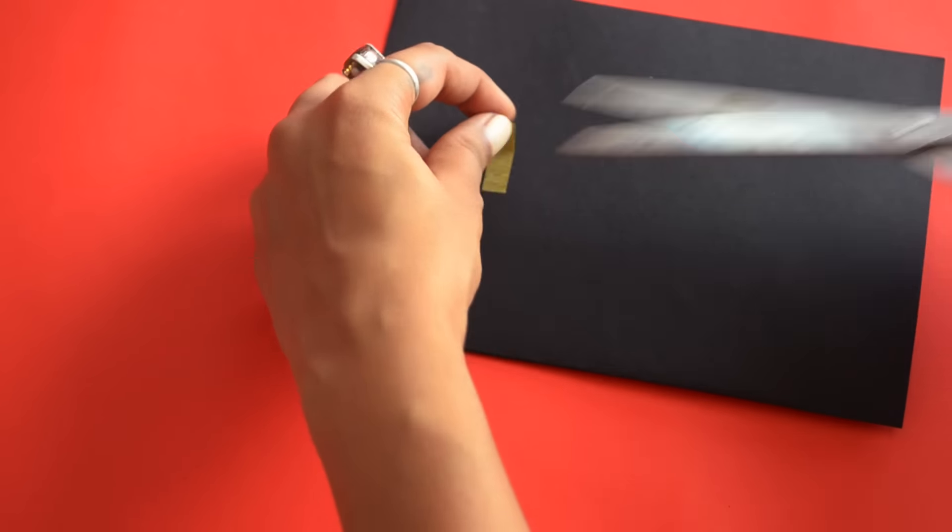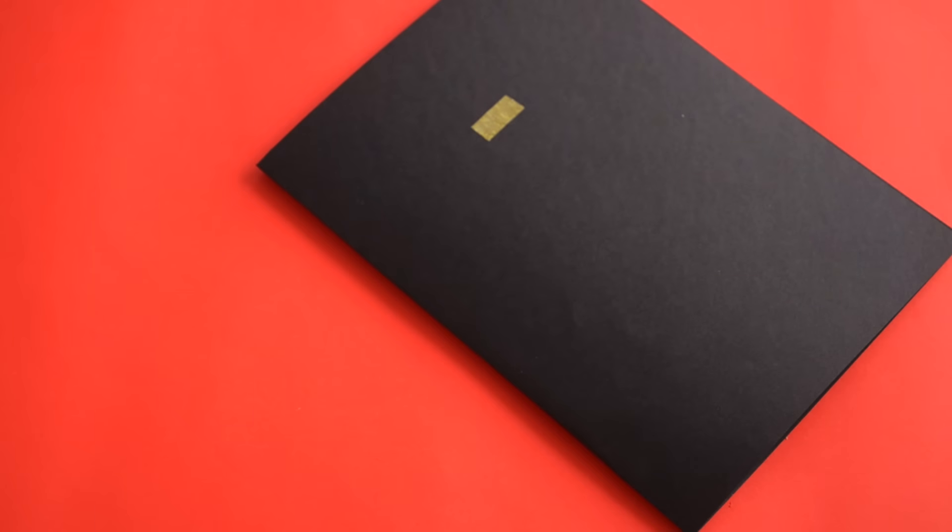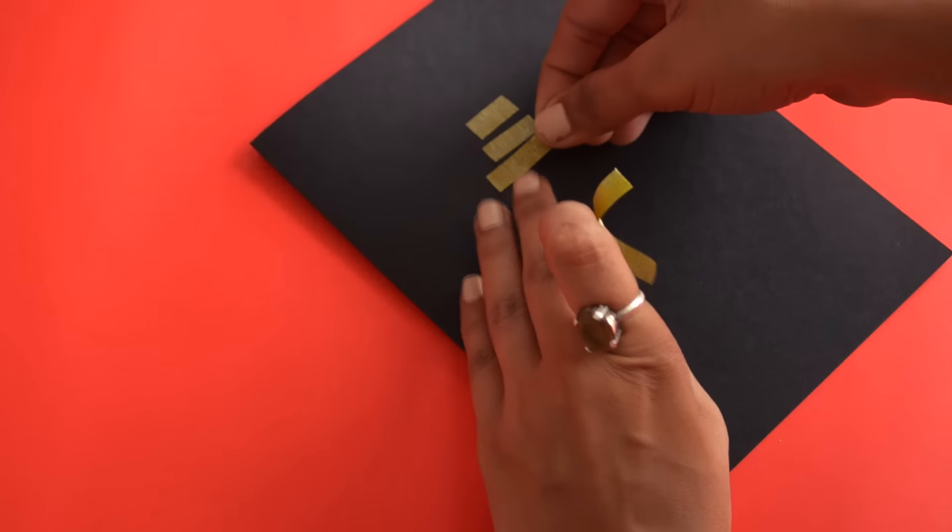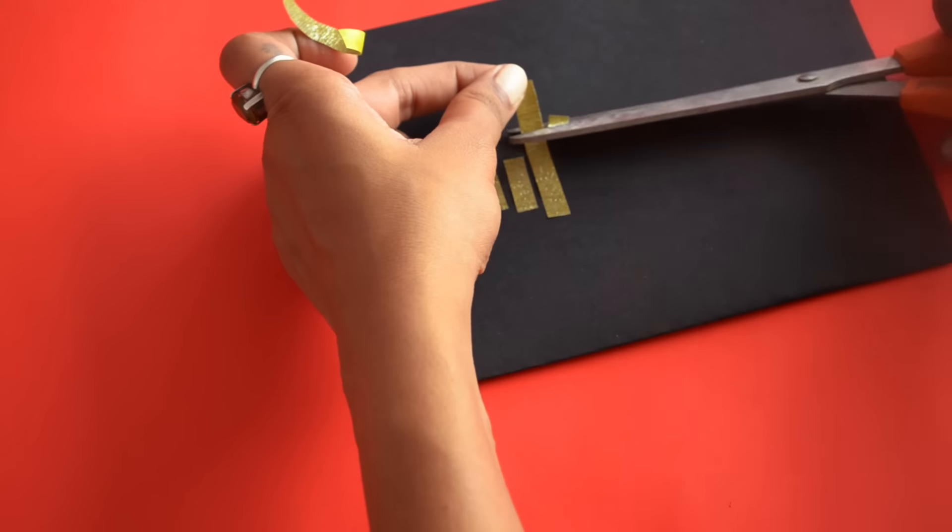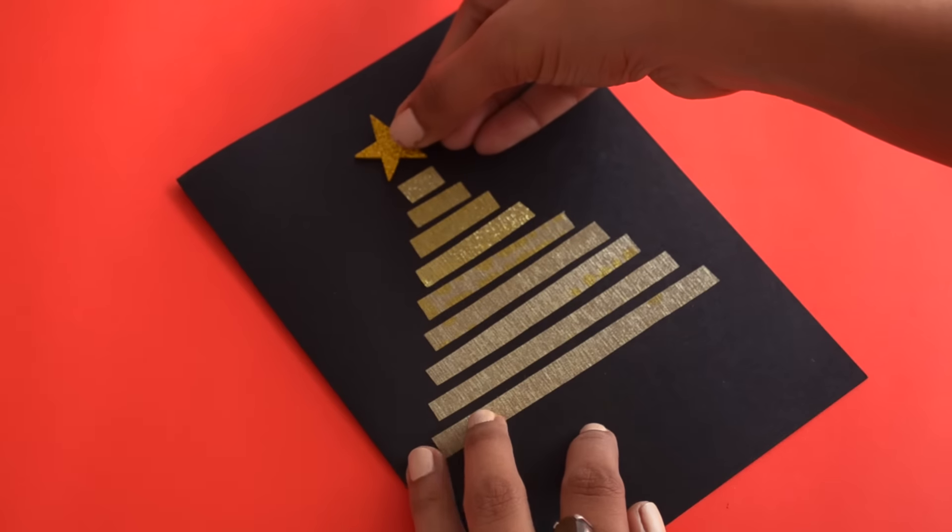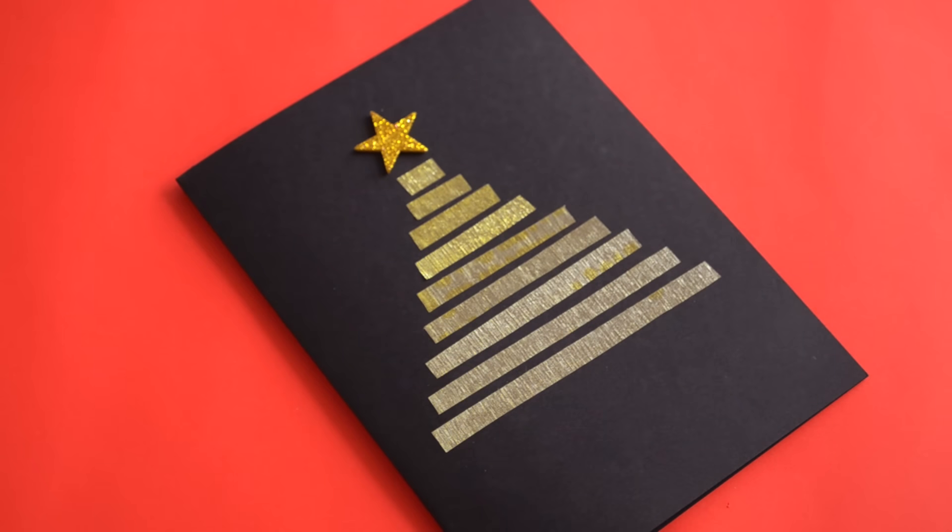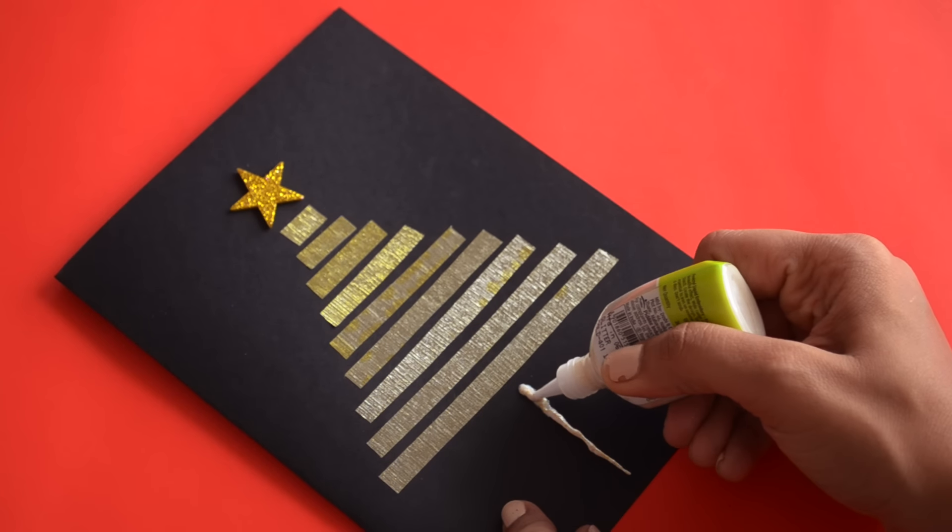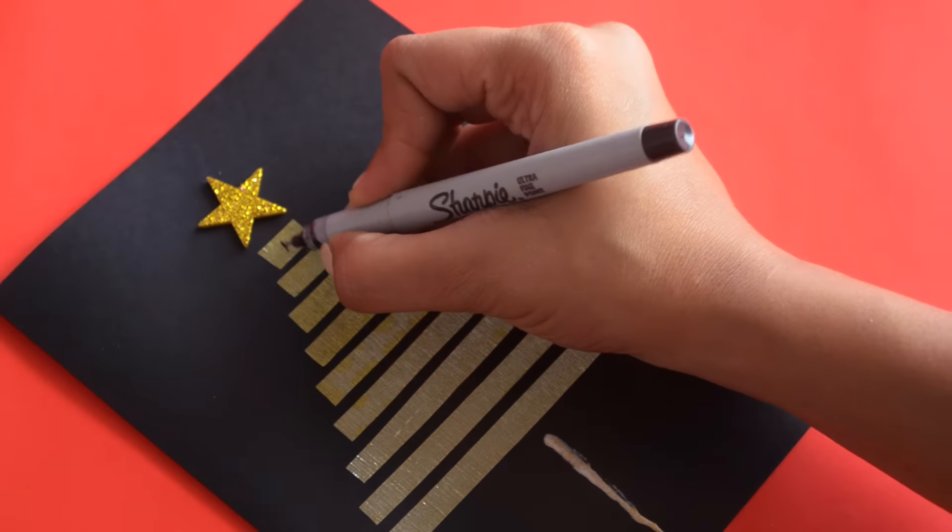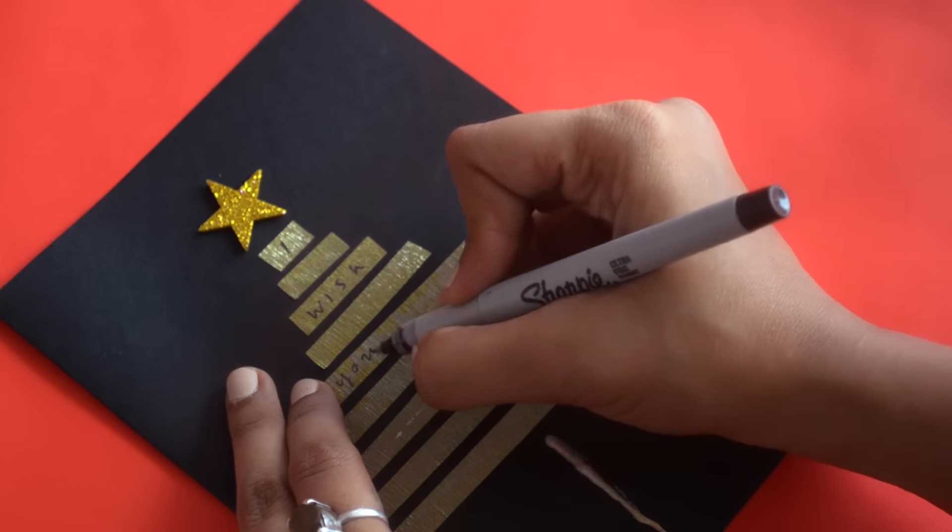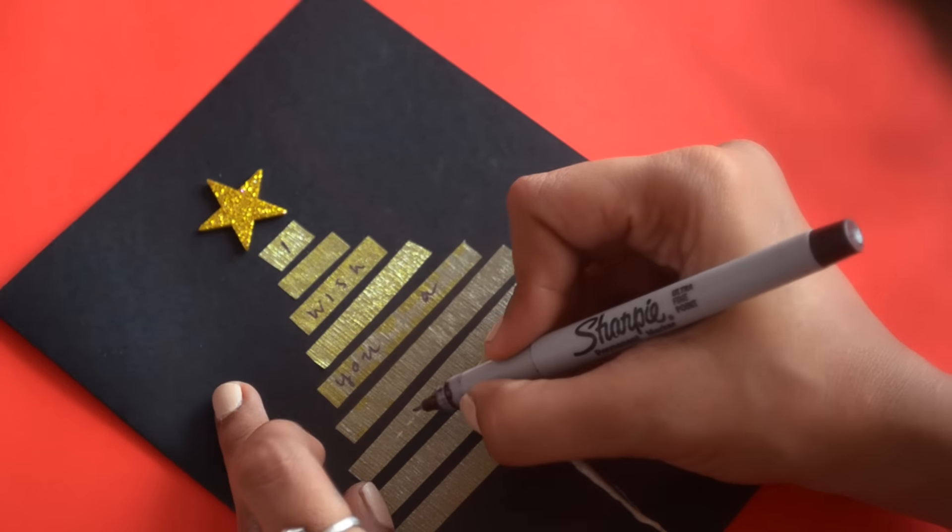For the second card, I folded a black card paper into half. I then used some gold tape and stuck them on the paper. Then I added the star on the top of the tree and used the Fevicryl tube at the bottom. Then I wrote I wish you a Merry Christmas with a marker on alternate tapes and that's it.